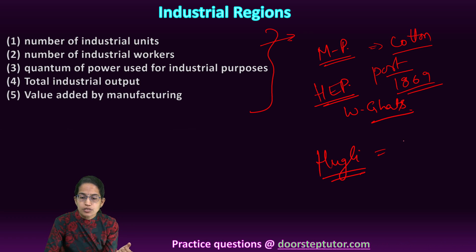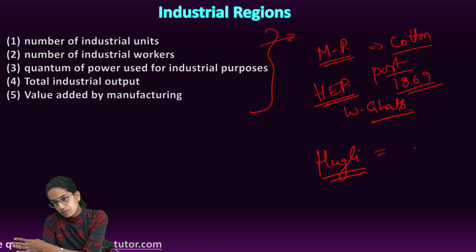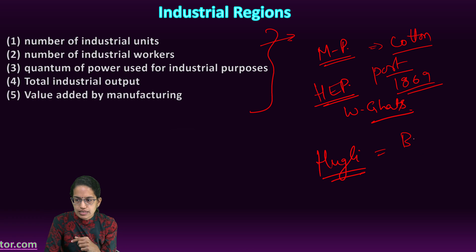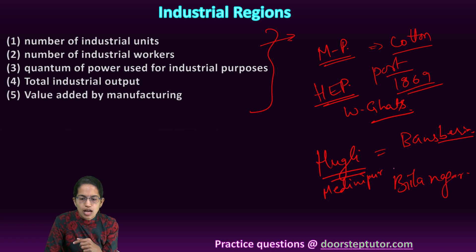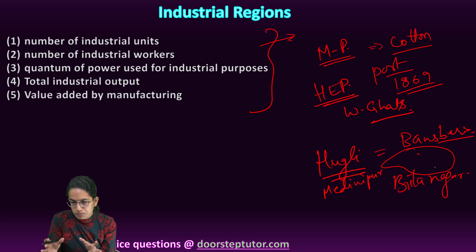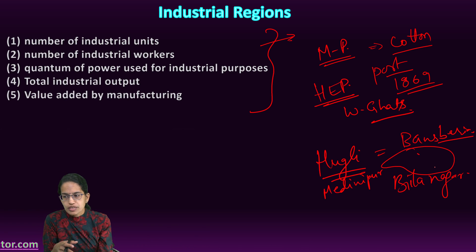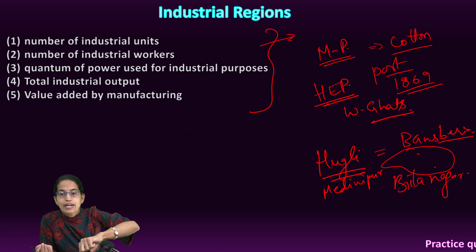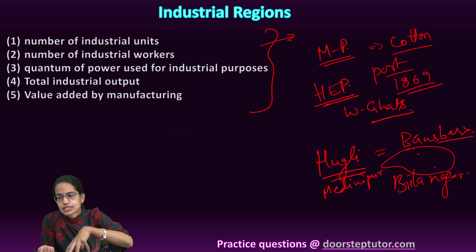The Hugli area lies from Bansbaria in the north to Birlanagar in the south, and Midnapore in the west — that is the extent of the Hugli cluster. The Hugli cluster was important because tea plantations from Assam, indigo cultivations from Bihar, and jute mills from the Rishra region were all transported through here — these were the major factors through which the Hugli industrial region developed.